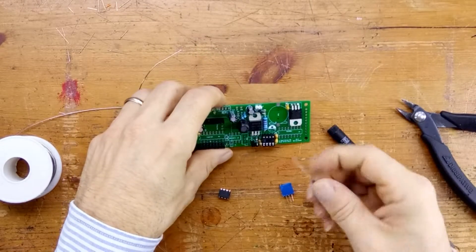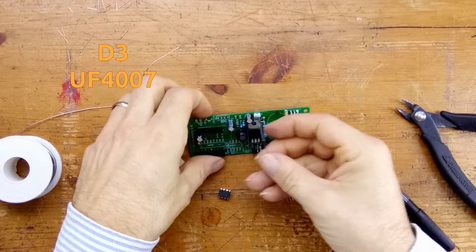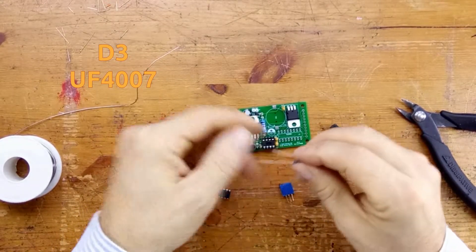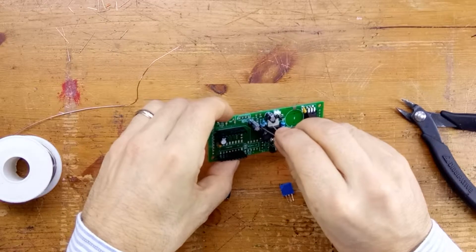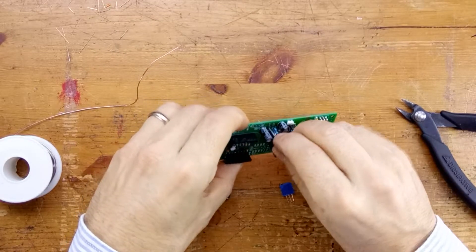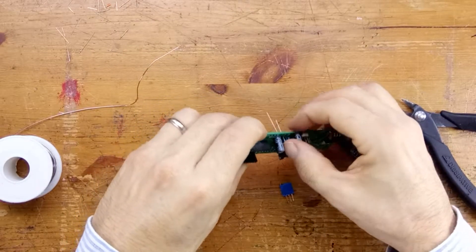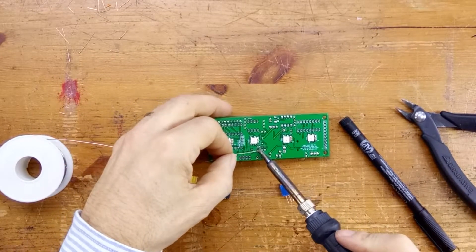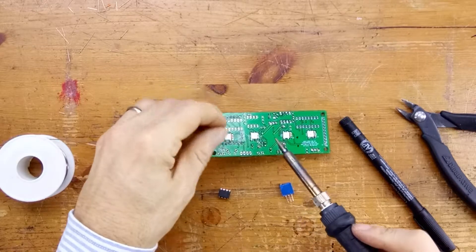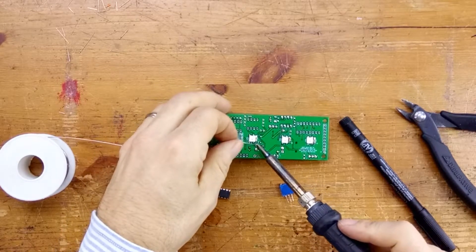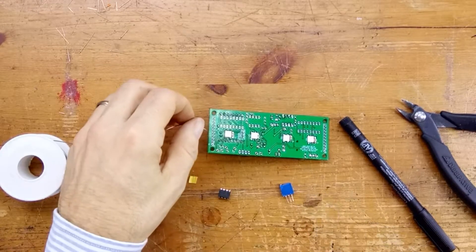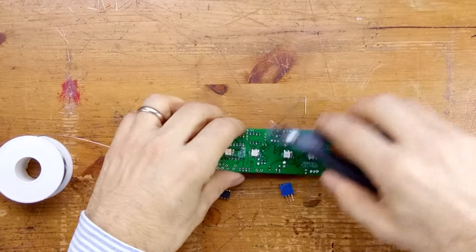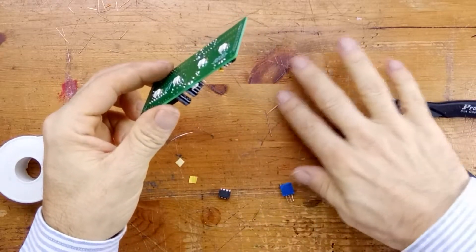Next, the diode D3, UF4007. Again, it has a white stripe on it, white or silver, and that goes into the pad with the square profile. Make sure the offcuts are well out of the way.